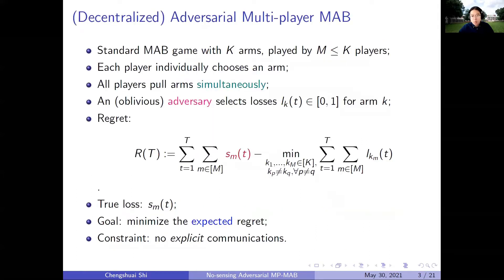In this work, we study the decentralized adversarial multiplayer multi-armed bandits. It still considers K arms, but there are M players simultaneously playing these arms. Also, an oblivious adversary selects a loss sequence for the arms, which can be arbitrary and has no stochastic structure. But we assume that the losses are bounded between 0 and 1.